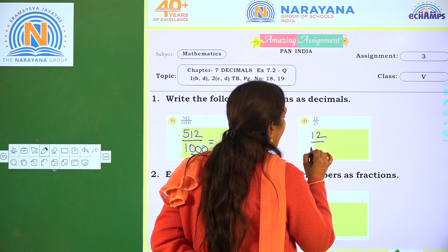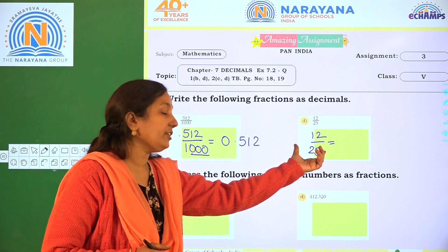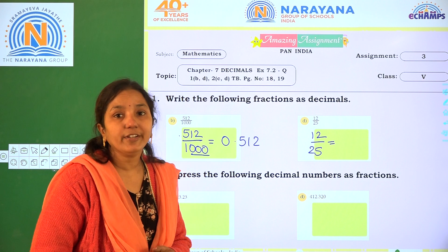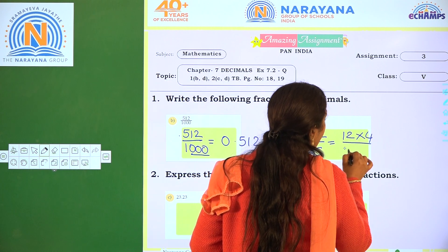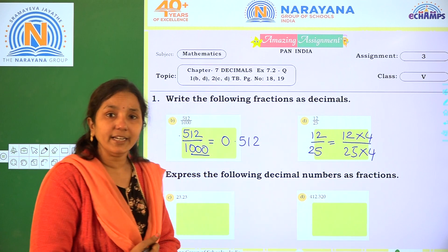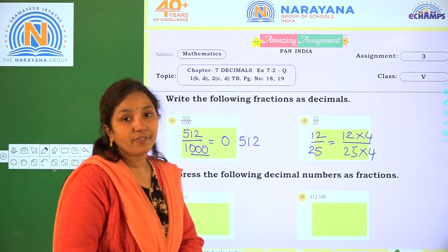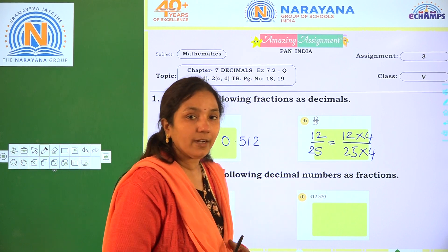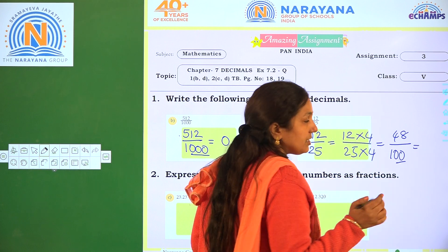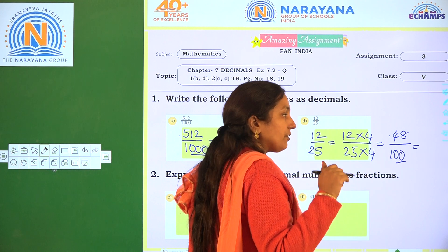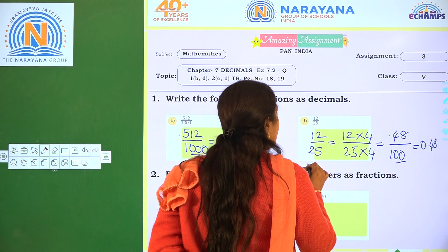Next, 1 by 25. Here the denominator is 25. To convert to a decimal number, we first have to convert the denominator to a multiple of 10 — that is 10, 100, or 1000. If we multiply by 4: 12 into 4 by 25 into 4. We must multiply both numerator and denominator, because multiplying only the denominator would change the value of the given fraction. So we get 48 by 100. How many zeros are there? Two zeros. So two decimal places from right to left. The answer is 0.48.